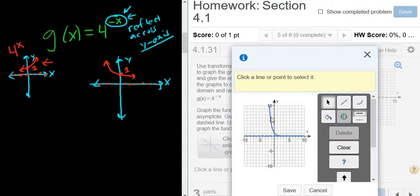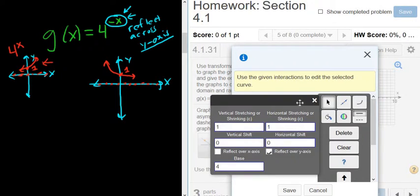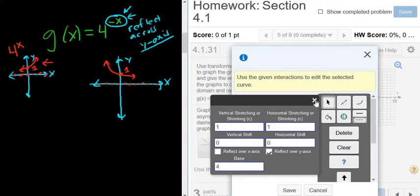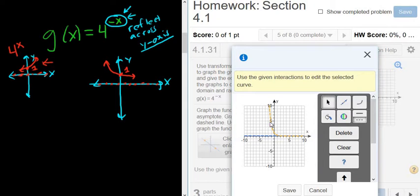So for example, say you wanted to make your exponential function dotted, which you wouldn't want to do. But if you did, you could click on it. Whoops. Close this. And then click dotted. And it would make it dotted, I think. Let's see. Did it work? Yeah, I made it dotted.